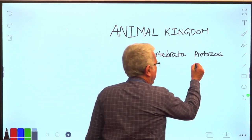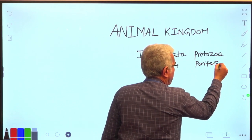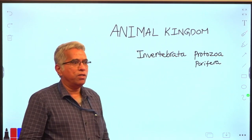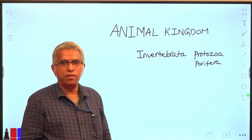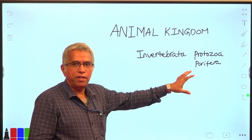It is followed by porifera. Porifera includes sponges, and these porifera exhibit cellular grade of organization.